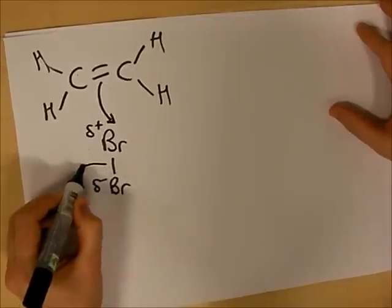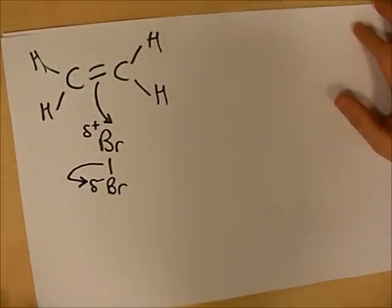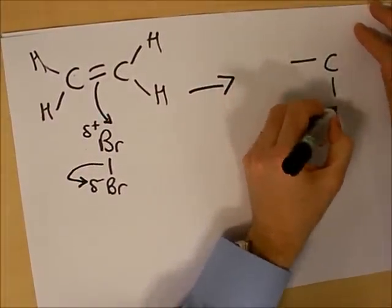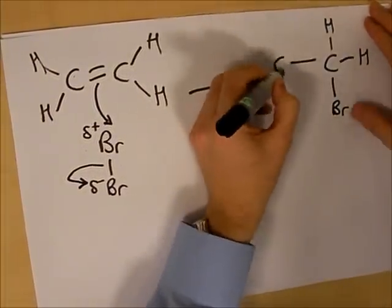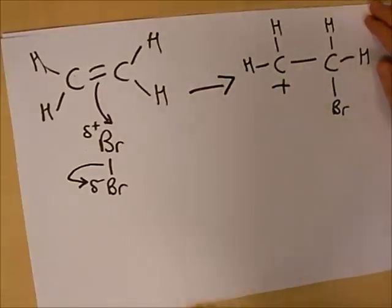This in turn causes this bond to break shown clearly by this double headed arrow. So what we form, one of the bromines has now attached to one of the carbons. But the other carbon is now a carbocation because it has a positive charge.